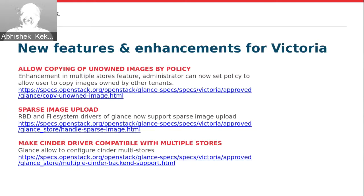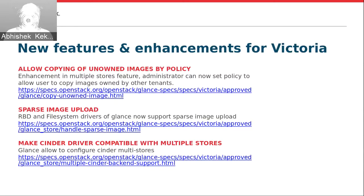These are the features and enhancements done for Victoria. Apart from that there are many bug fixes and small features, like you can now set virtual size to the image. The virtual size can be set automatically at the time of creation, which can be used by Nova and Cinder to avoid running heavy operations like running qemu-img info to calculate virtual size at their end.